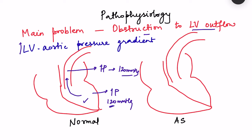So maximum pressure in the left ventricle can be about 122 mmHg, giving a left ventricular to aortic pressure gradient of only 2 mmHg in physiological conditions — and that 2 mmHg is sufficient to cause blood flow from the left ventricle to the aorta.